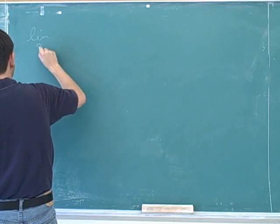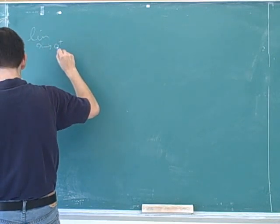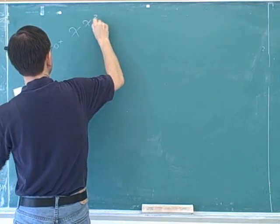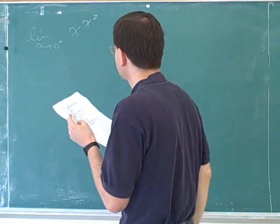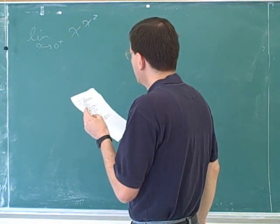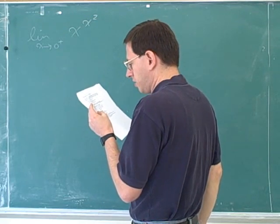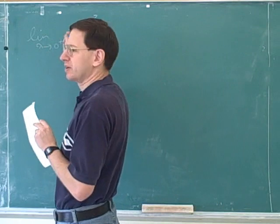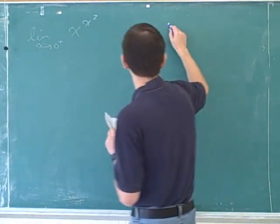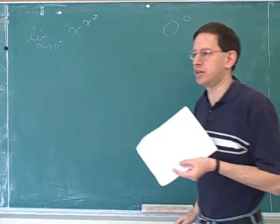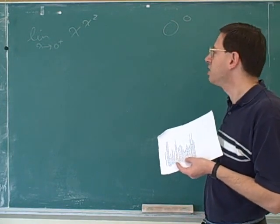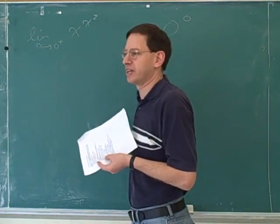The limit as x approaches 0 from the right of x to the x squared. Now, what we usually do in these limit problems is we just plug in the number and see what we would get. But if we just plug in the number here, we'll get 0 to the 0 power, which you've learned is an indeterminate form. Since this is indeterminate, we can't just use the usual technique of plugging in 0.